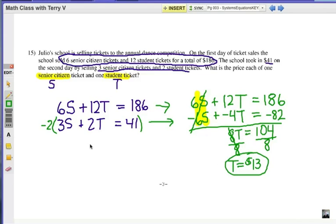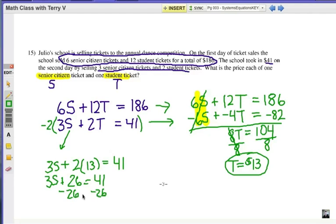Alright, let's substitute it in one of our equations and let's go ahead and choose the second one here. It looks like the numbers are smaller. So 3S plus 2T, but T is $13, right? And then I'm going to have 41 as my total. So 3S plus 26 equals 41. Subtract 26 from each side. And eventually I'm going to get senior citizen ticket is $5.